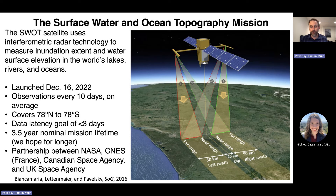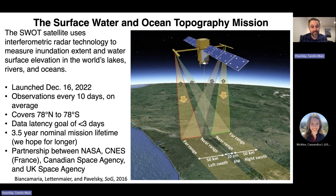It launched on December 16th of 2022. We get observations something like every 10 days, but it really varies a lot depending on where you are globally. It covers most of the globe, unless you're interested in key parts of the Arctic and Antarctic. Our goal is to have data out to you within three days of when it's collected. It's supposed to be a three and a half year mission, and importantly, it's a partnership between NASA, CNES — the French Space Agency — with additional contributions from the Canadian Space Agency and the UK Space Agency.